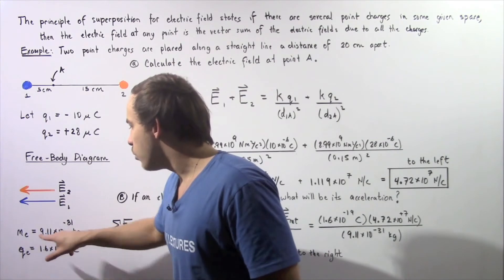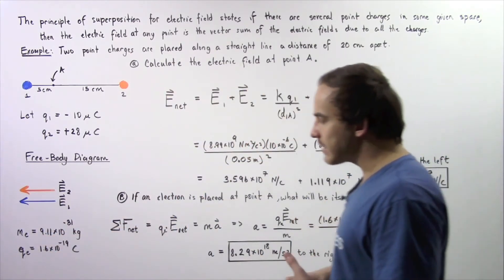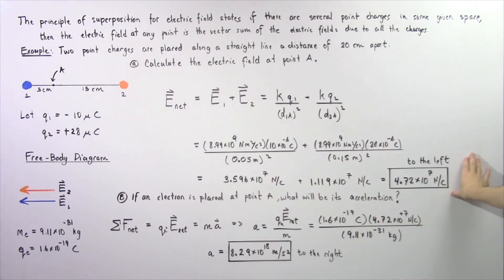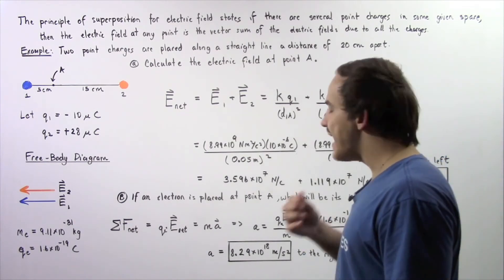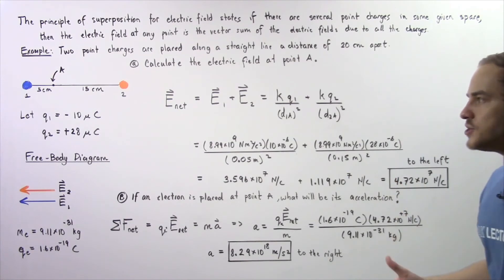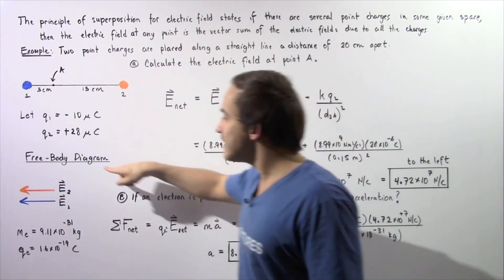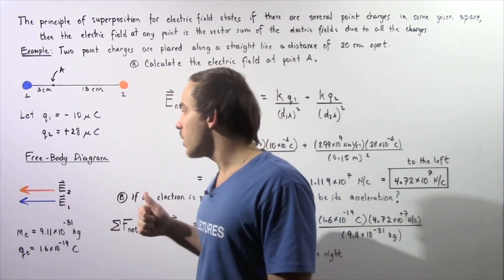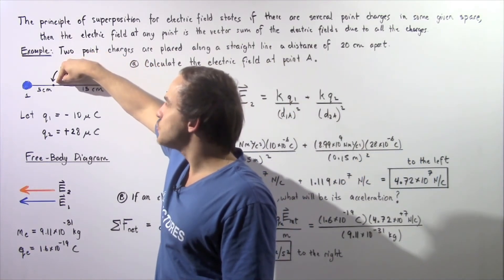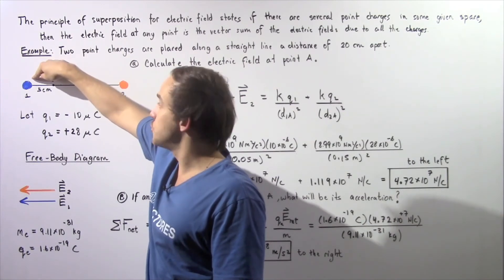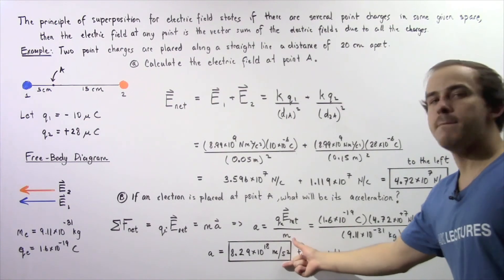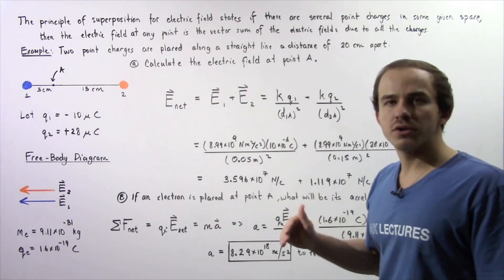Multiplying the charge by the electric field from part A and dividing by the electron mass, we get approximately 8.29 times 10 to the 18 meters per second squared as the magnitude of acceleration. The direction is to the right, because the electric field points left and the electron (being negative) accelerates opposite to the field — away from the negative charge and toward the positive charge.